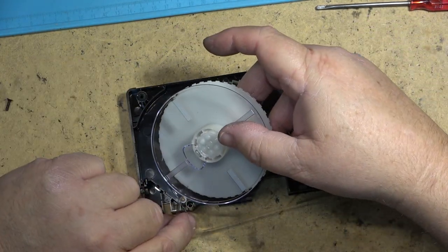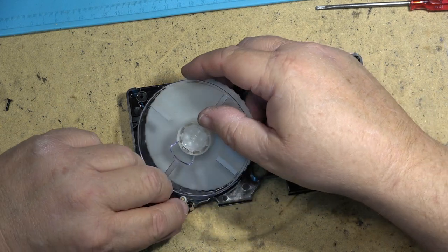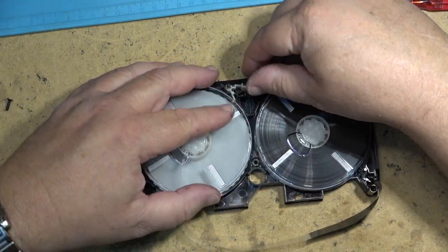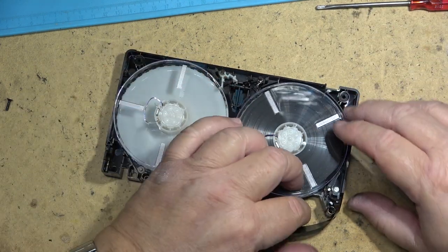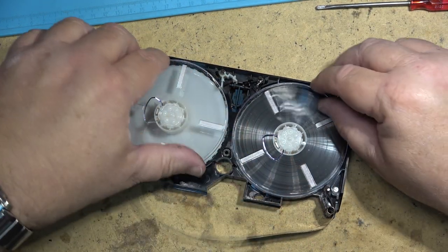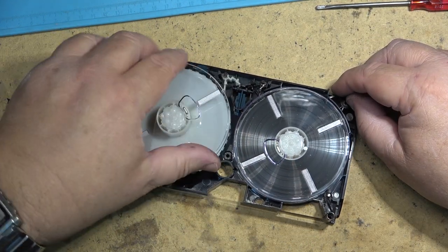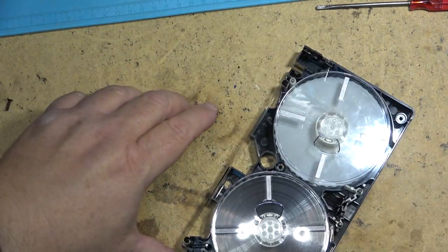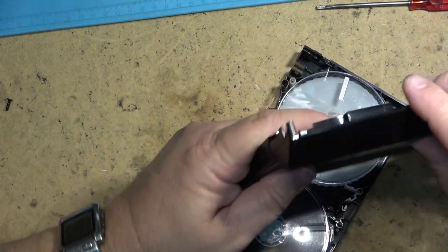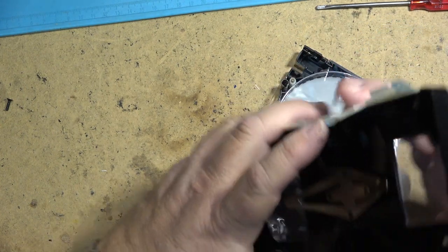And then we just thread the tape back in over the tape guides. Now I can reassemble the cassette and it's good to go.